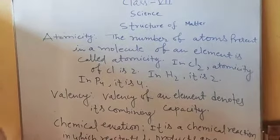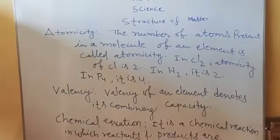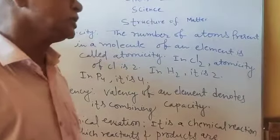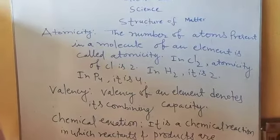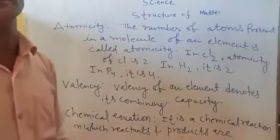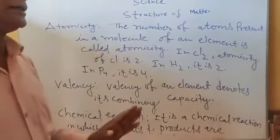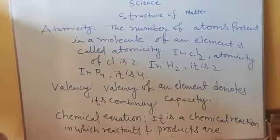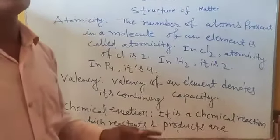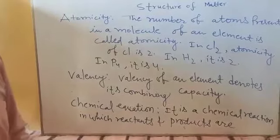For example, Cl2. In case of Cl2, 2 atoms of Cl is present. So atomicity of Cl is 2. In P4, the 4 atoms of phosphorus is present. So atomicity of phosphorus is 4.